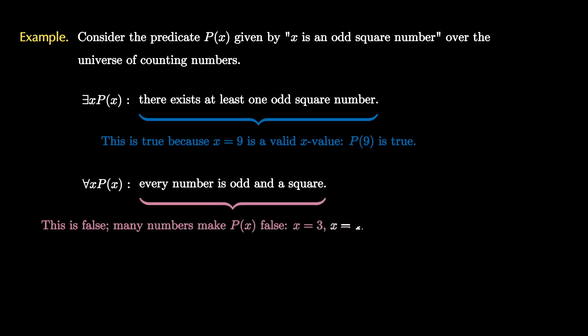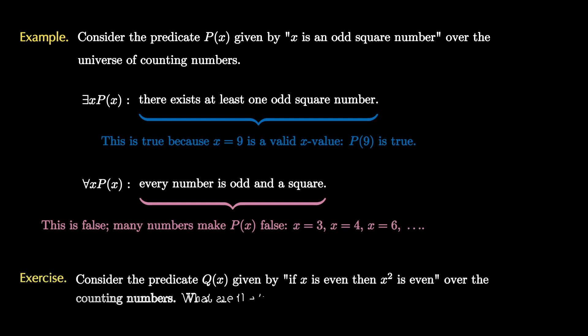For example, x equals 3, x equals 4, and x equals 6 all make some part of P(x) false — they don't all make it true. Try it yourself: consider the predicate Q(x) given by 'if x is even, then x squared is even' over the universe of counting numbers. What can you say about the quantified statements 'there exists x Q(x)' or 'for all x Q(x)'?